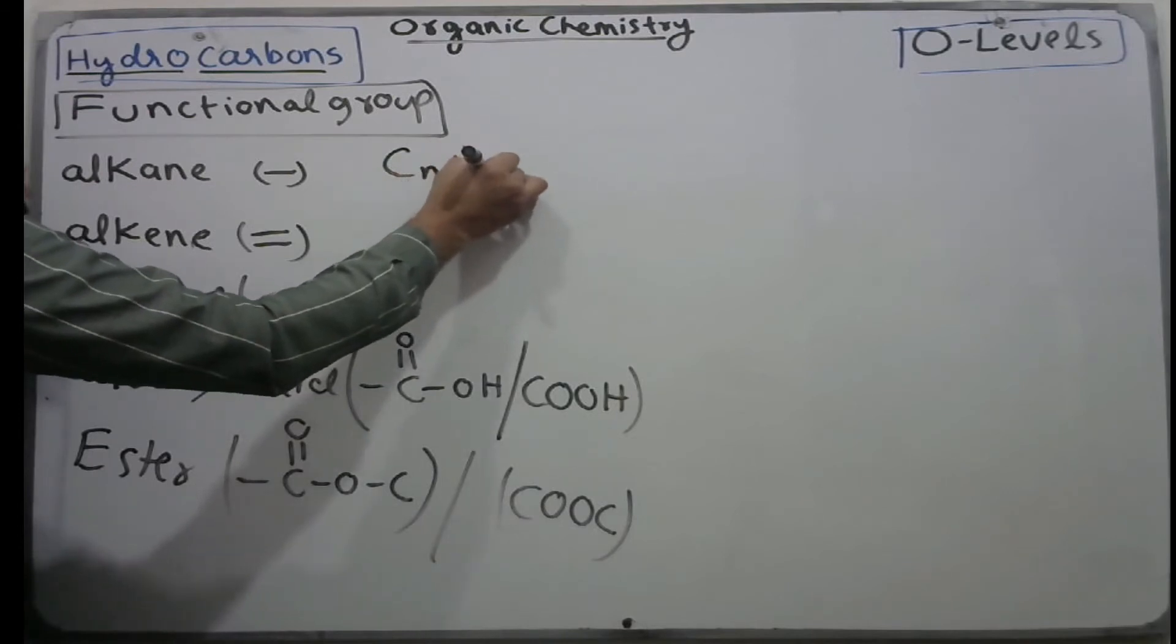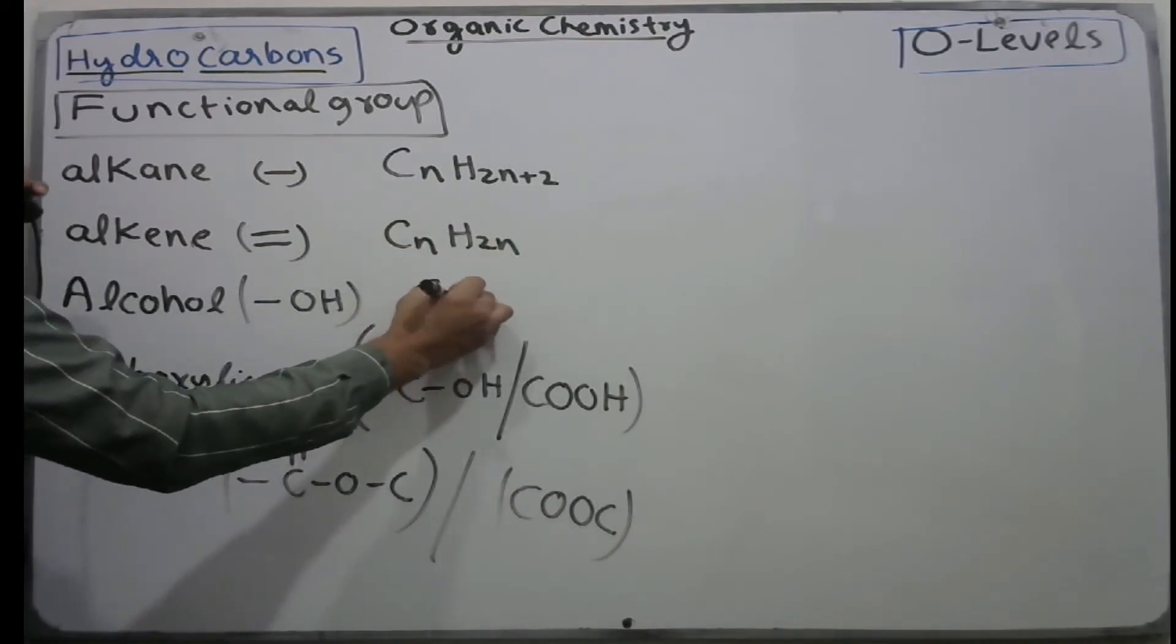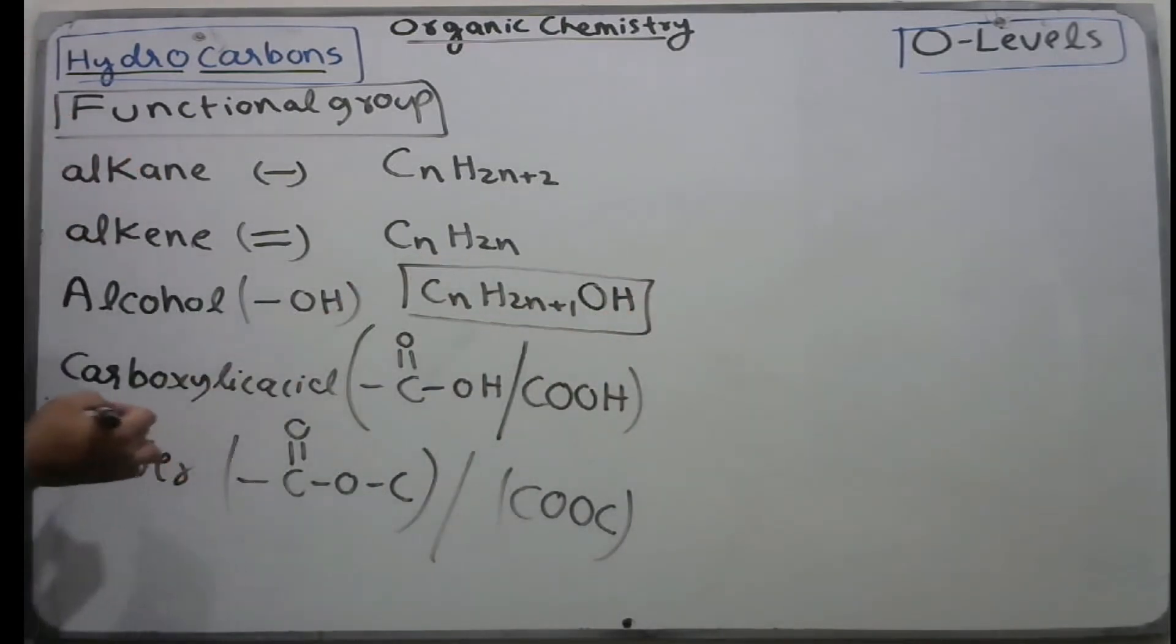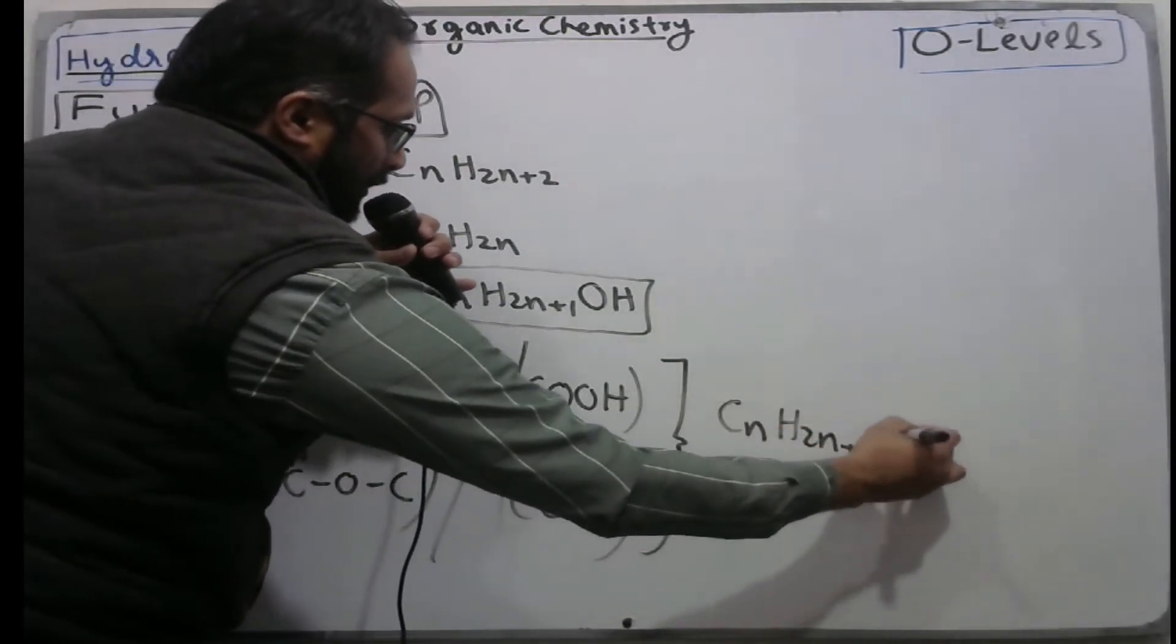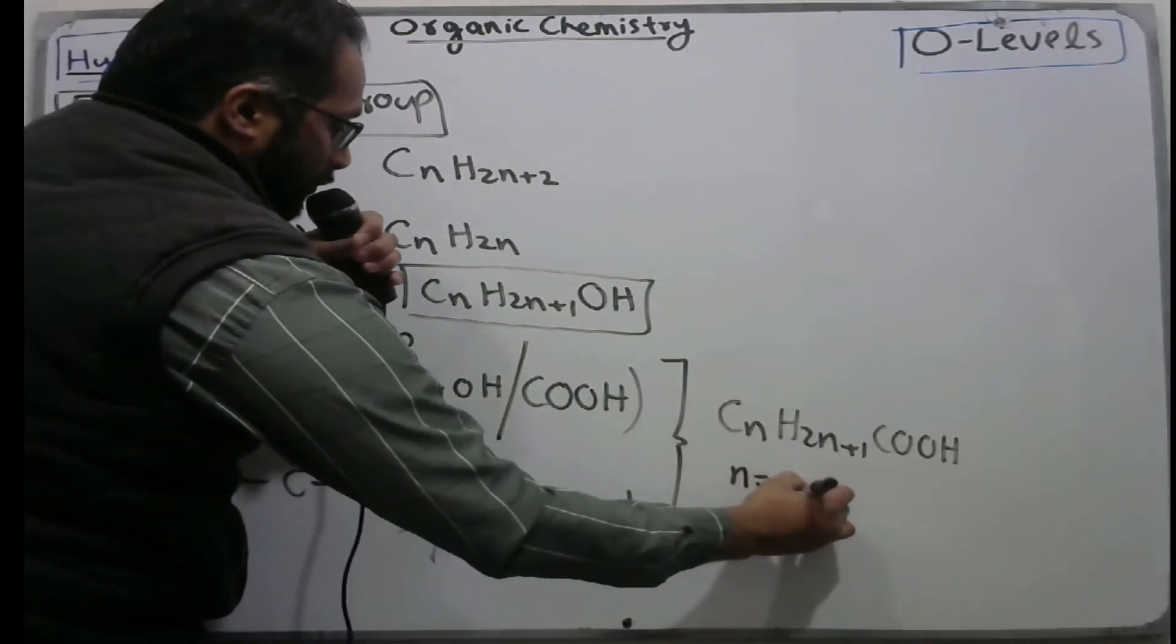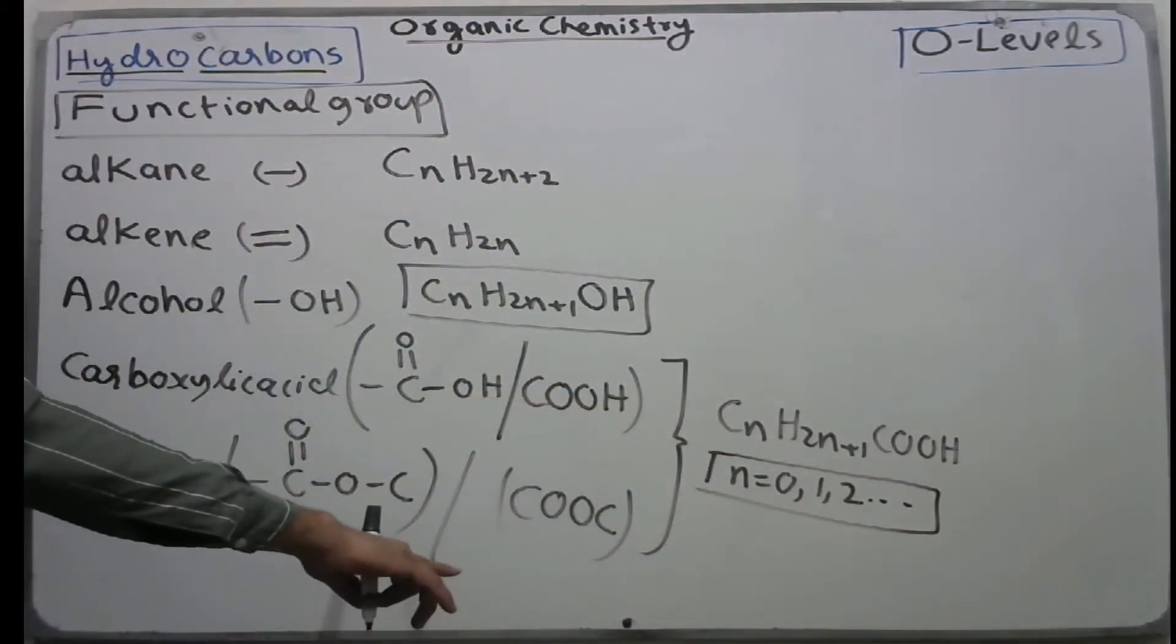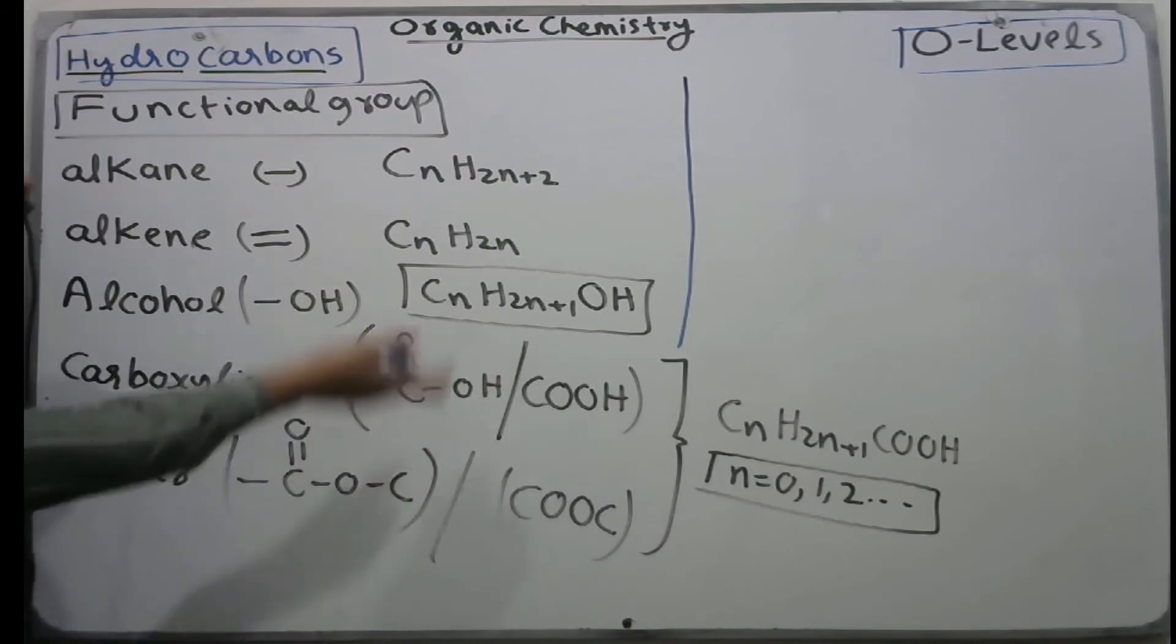We discussed already that alkanes have the formula CnH2n+2. For alcohols, the general formula is CnH2n+1 OH. These are derived from alkanes - you remove one H and place OH. For carboxylic acids, the general formula is also CnH2n+1 COOH, but here you put n from zero onward because carboxylic acid has one carbon already present.